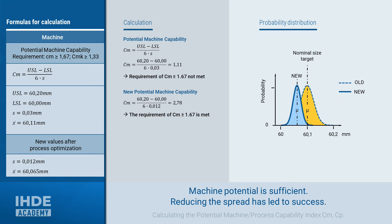Although we don't need it right now, the new mean is 60.065 mm. With the improved standard deviation, a machine potential of 2.78 is now calculated. This fulfills the minimum requirement for CM of 1.67.